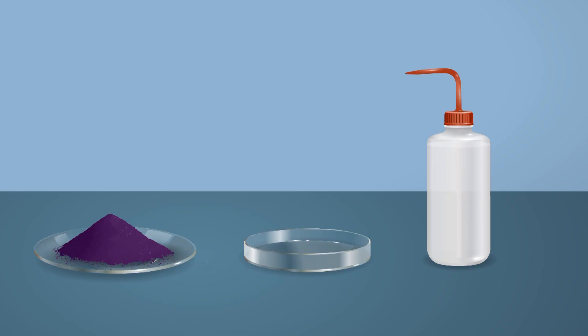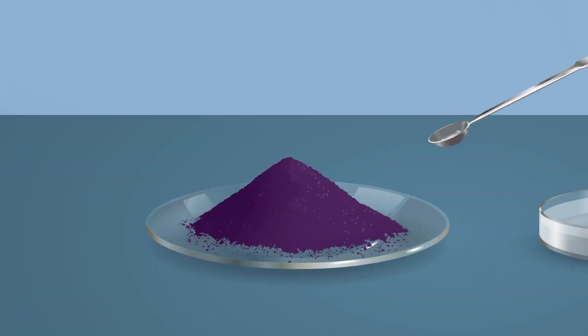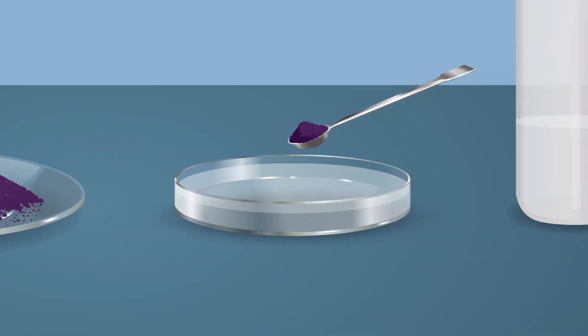Fill half of the dish with water. Add potassium permanganate for coloring.